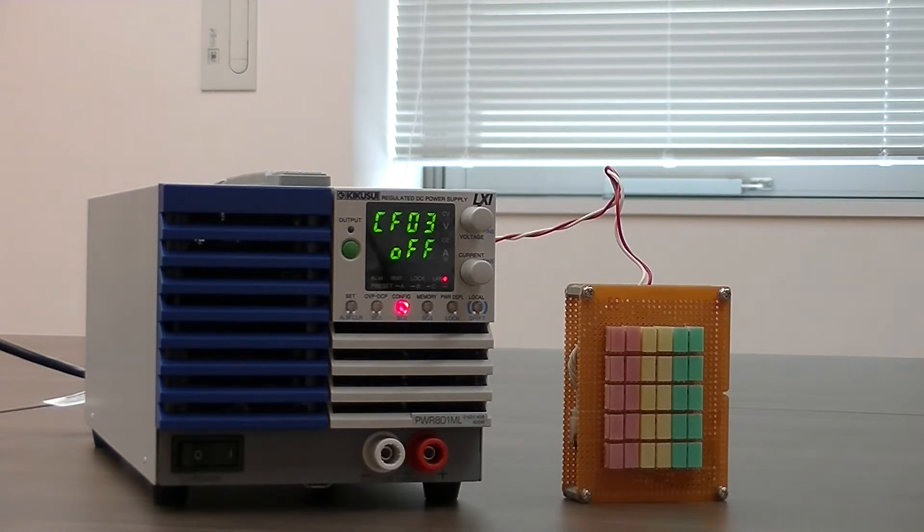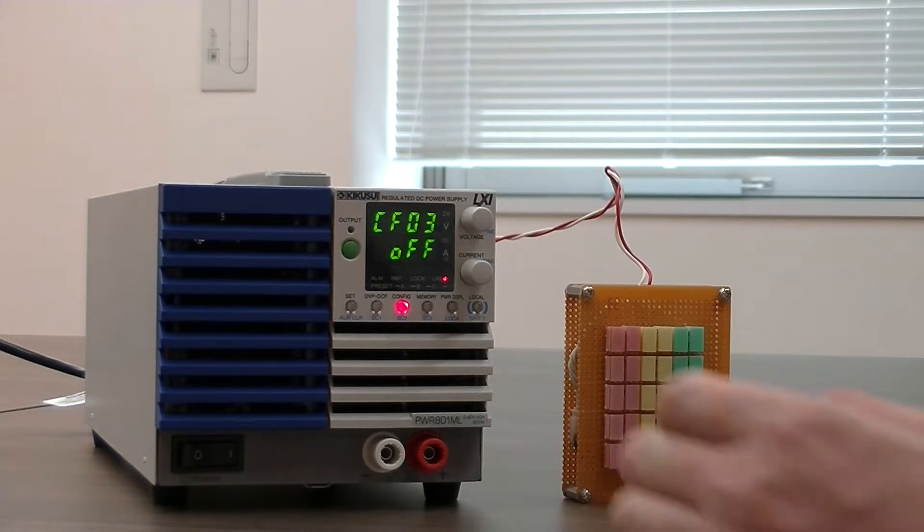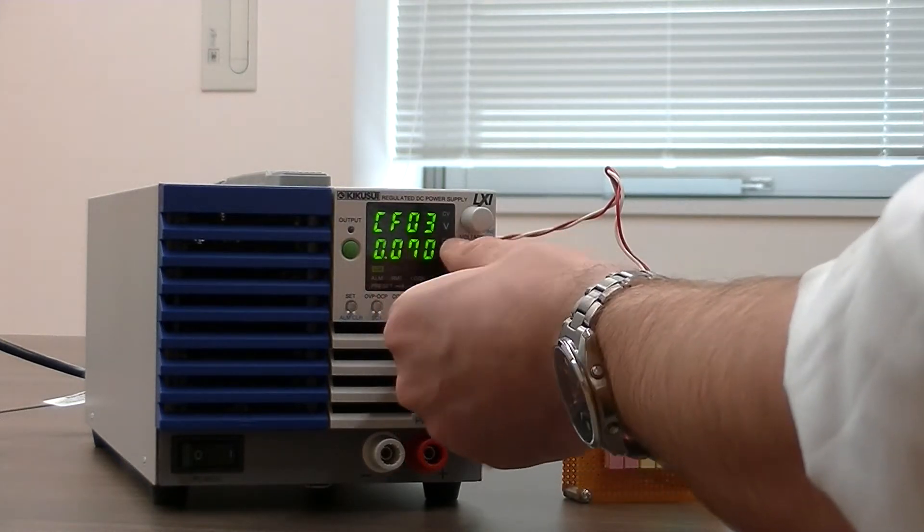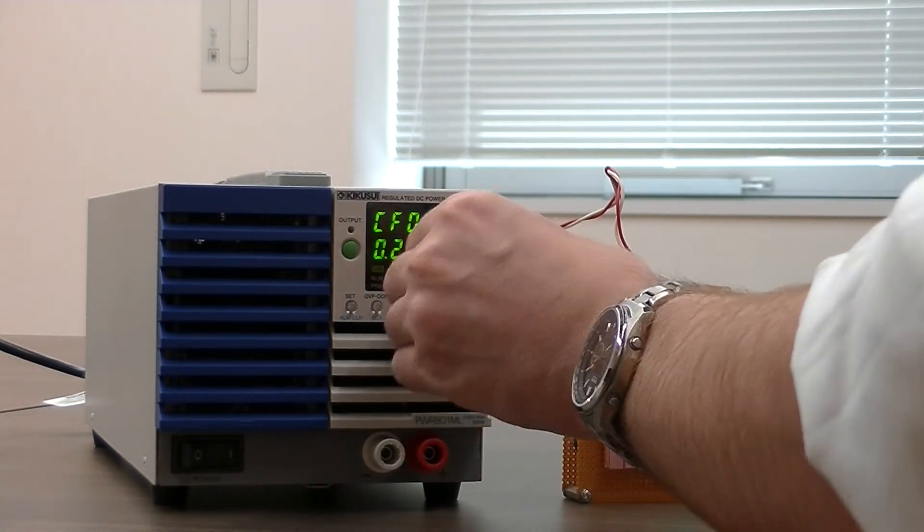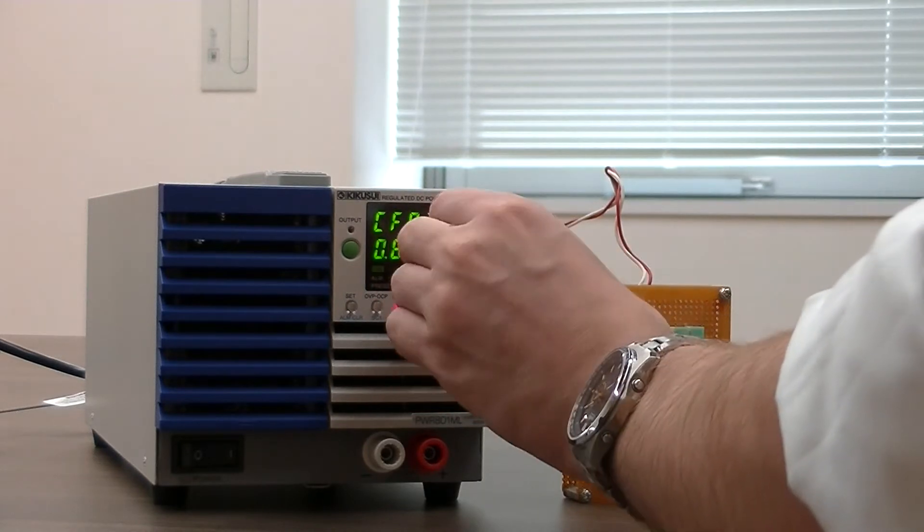The amount of resistance you can apply internally depends on the model, and with this specific model, the PWR-801ML, the maximum amount of resistance is 2 ohms.